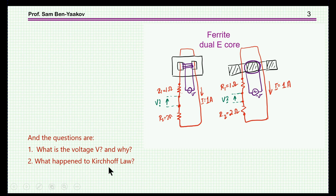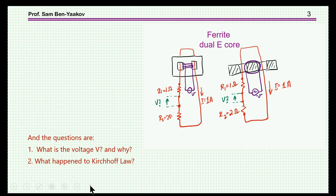What's the explanation or the analysis for it? And what happened to Kirchhoff's law? Because if you look at this loop and add up the voltages across these resistors, the sum of these is not zero, as you would expect from Kirchhoff's voltage law. So this is the riddle.